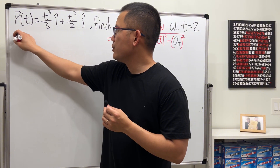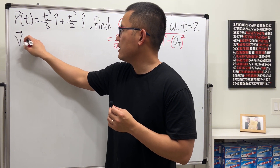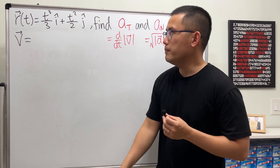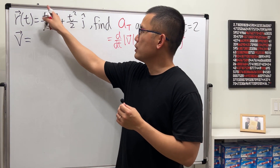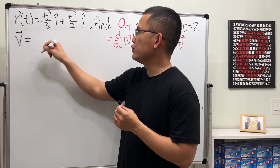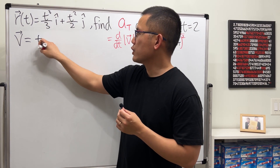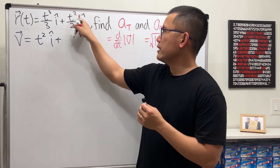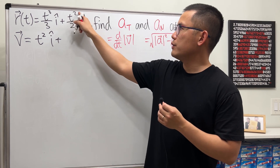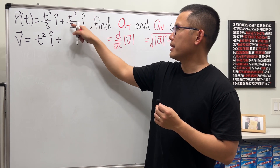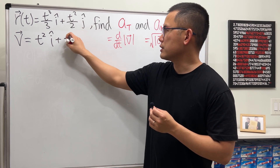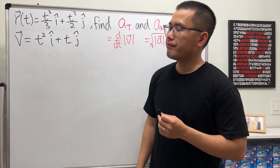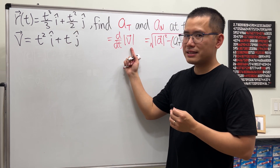First, we need to get the velocity — just take the derivative of the position with respect to t. Put the 3 to the front minus 1; 3 and 3 cancel, so we get t² i. Then take the derivative of the next term: put the 2 to the front minus 1; 2 and 2 cancel, so just t j. So that's the velocity.